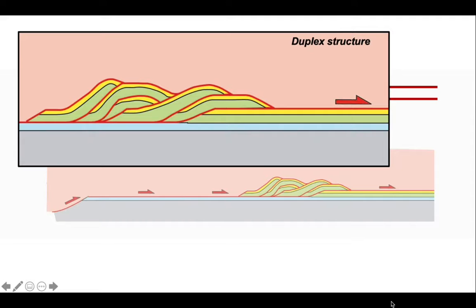So let's have a look at this. The final structure is called a duplex. It's bound at the top by a roof thrust, and the lower thrust at the bottom is called a floor thrust. Some more terminology. The slices in between that are entirely fault bounded are termed horses, and the thrusts concerned are called imbricate thrusts that separate them.